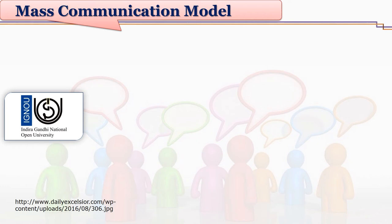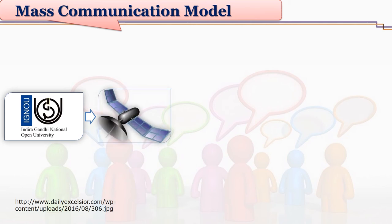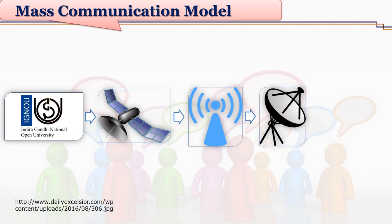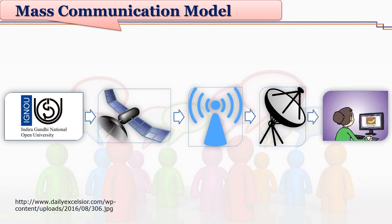Let us take an example. An open university records some lectures — the recorded lecture is the message which is sent, captured by the satellite through electromagnetic waves. The satellite then transmits these lectures; a dish antenna receives them, and through the television set students see the recorded lectures. The same message the teacher recorded is seen by students through the television set and satellite — and the journey of the message in the form of electromagnetic waves via the dish antenna is how mass communication takes place.